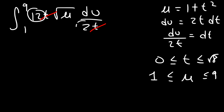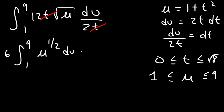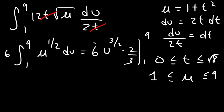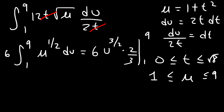Now 12 divided by 2 is 6, and we can move that to the front. So this is 6 times the integral from 1 to 9 of the square root of u, which is u to the 1/2, du. Now let's use the power rule. 1/2 plus 1 is 3/2. And instead of dividing by 3/2, we're going to multiply by 2/3. Now 6 divided by 3 is 2, and then times another 2, that's going to be 4. So this is equal to 4 times u raised to the 3/2, evaluated from 1 to 9.